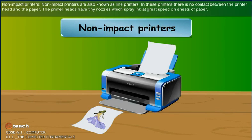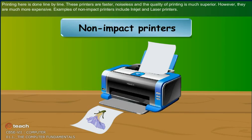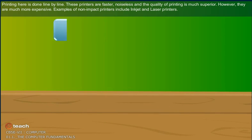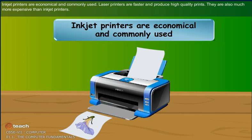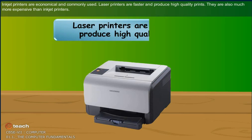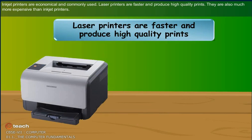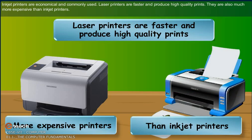Non-impact printers are also known as line printers. In these printers, there is no contact between the printer head and the paper. The printer heads have tiny nozzles which spray ink at great speed on sheets of paper. Printing here is done line by line. These printers are faster, noiseless and the quality of printing is much superior. However, they are much more expensive. Examples of non-impact printers include inkjet and laser printers. Inkjet printers are economical and commonly used. Laser printers are faster and produce high quality prints. They are also much more expensive than inkjet printers.